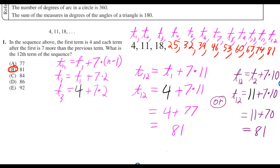You don't have to start from the first term. You could have started from the second term by adding only 10 sevens. So the formula, if you're starting from the second term, would be you take the second term and add n minus 2 sevens to get to the nth term.